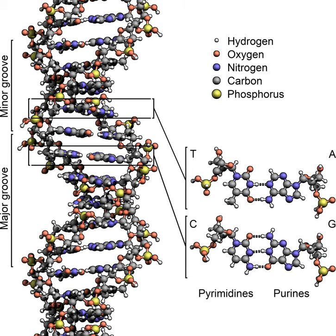DNA is located in the cell nucleus of eukaryotes as well as in small amounts in mitochondria and chloroplasts. In prokaryotes, the DNA is held within an irregularly shaped body in the cytoplasm called the nucleoid. The DNA is usually in linear chromosomes in eukaryotes and circular chromosomes in prokaryotes. In the human genome, there is approximately 3 billion base pairs of DNA arranged into 46 chromosomes. The genetic information in the genome is held within genes. A gene is a unit of heredity and is a region of DNA that influences a particular characteristic in an organism.